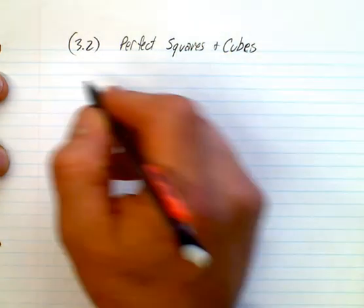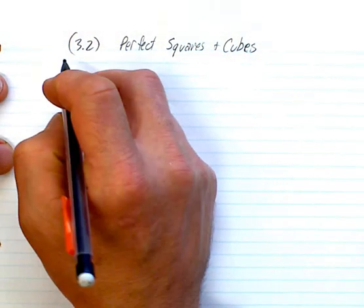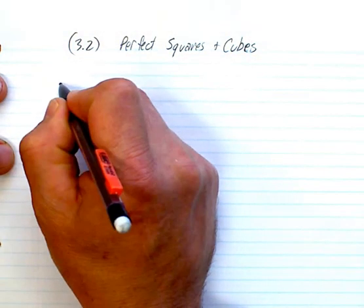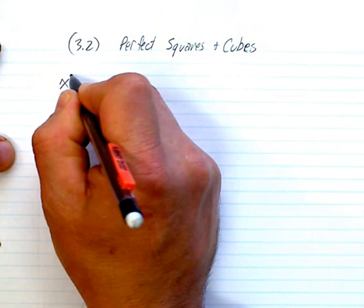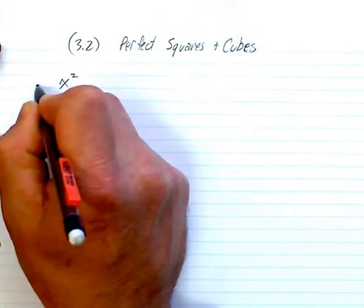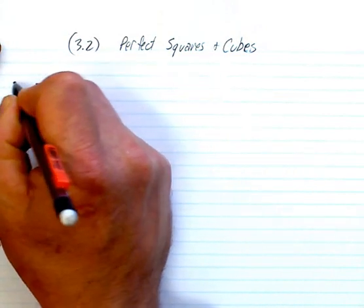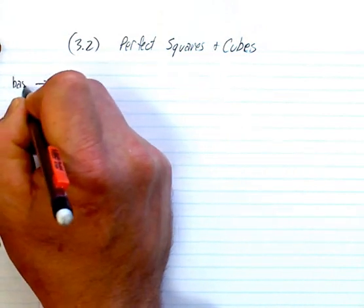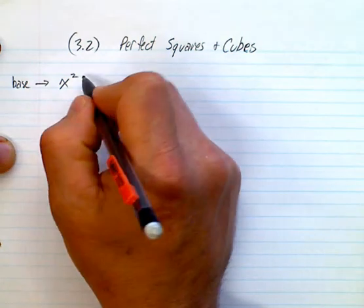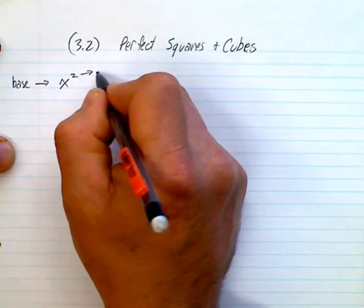Now, hopefully you understand that if you have a number like x squared, we call this number down here the base, and we call this number up here the exponent.